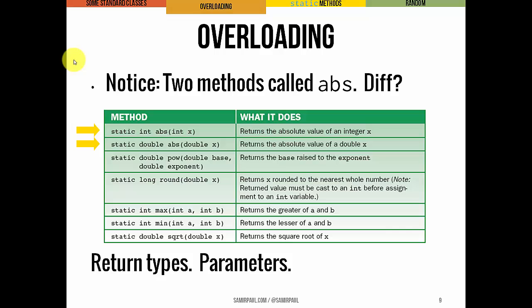There are actually two methods that are both called abs for absolute value. What's the difference? You can see their return types are different. This first one returns an int, this second one returns a double, and their parameters are different as well. This one takes an integer, this one takes a double.